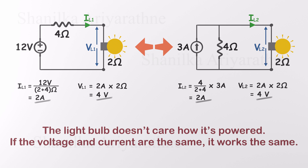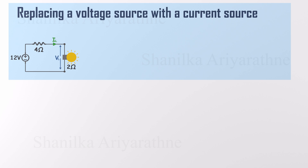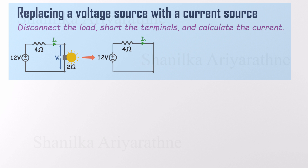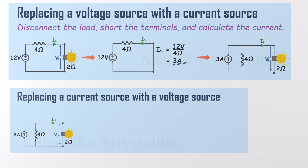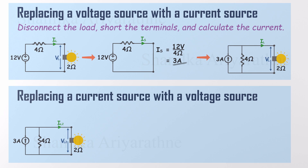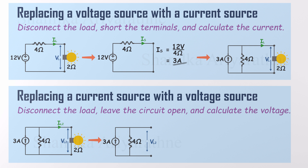In some cases, we can replace voltage sources with current sources and vice versa to make the analysis easier. But how do we figure out the correct value of the transformed source? It's actually quite straightforward. If you're replacing a voltage source in series with a resistor by a current source in parallel, imagine disconnecting the load and shorting the terminals, then calculate the current through the resistor — that current becomes the value of the new current source. On the flip side, if you're replacing a current source in parallel by a voltage source in series, disconnect the load and leave the circuit open, then calculate the voltage across the resistor — that's your new voltage source value.